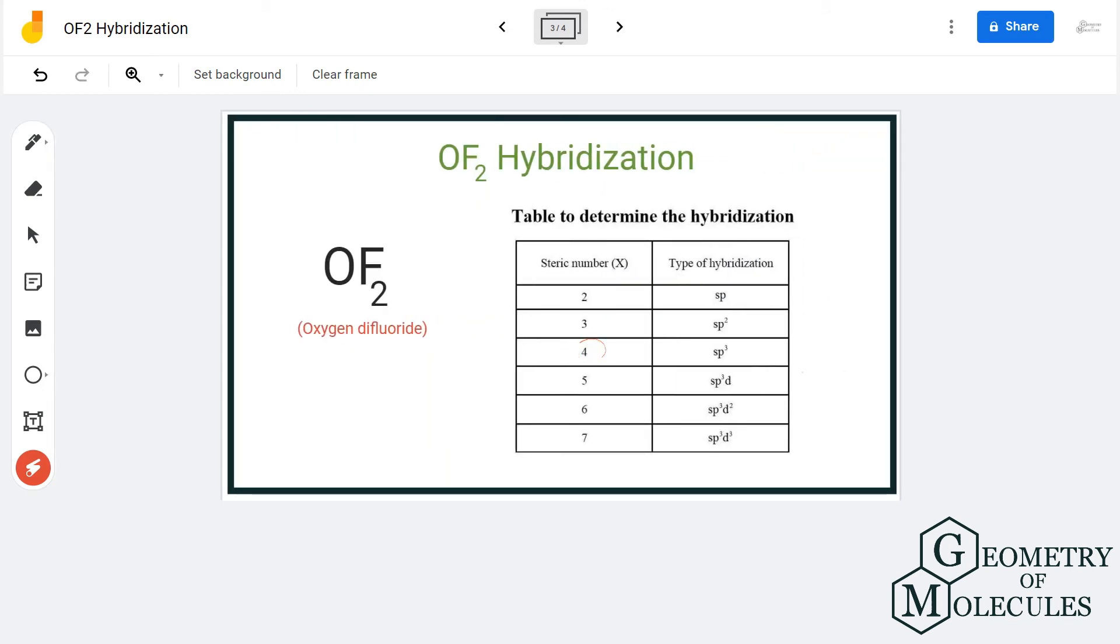Since there are four hybrid orbitals formed to accommodate all these electrons, the hybridization will be sp3. One orbital of s and three orbitals of 2p will hybridize to accommodate all these electrons. So the hybridization of OF2 molecule is sp3.